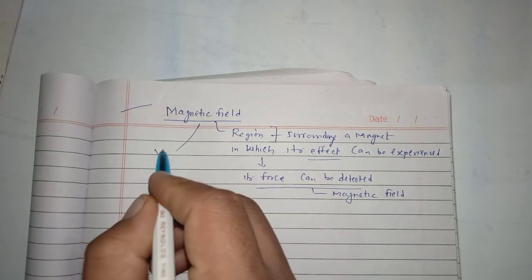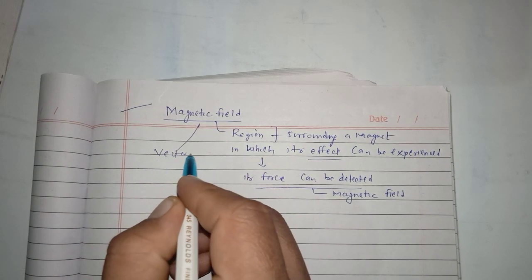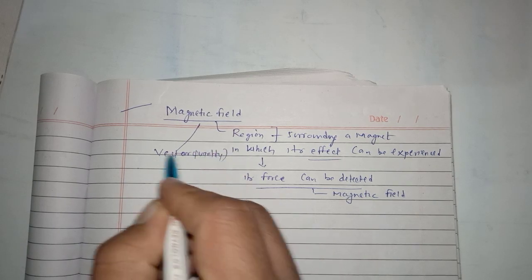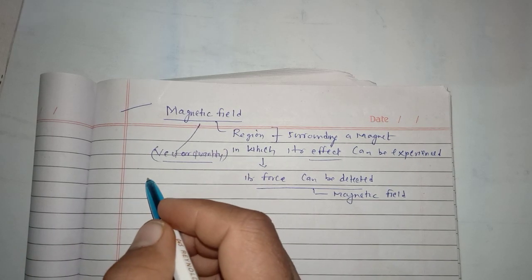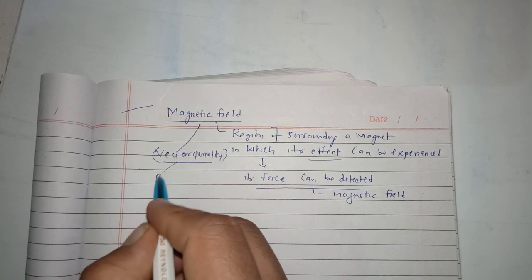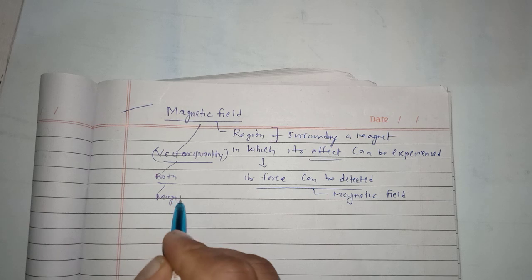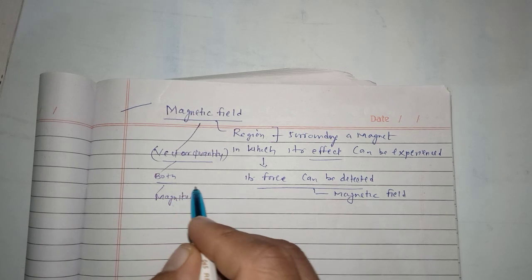Magnetic field is a vector quantity which has both magnitude and direction.